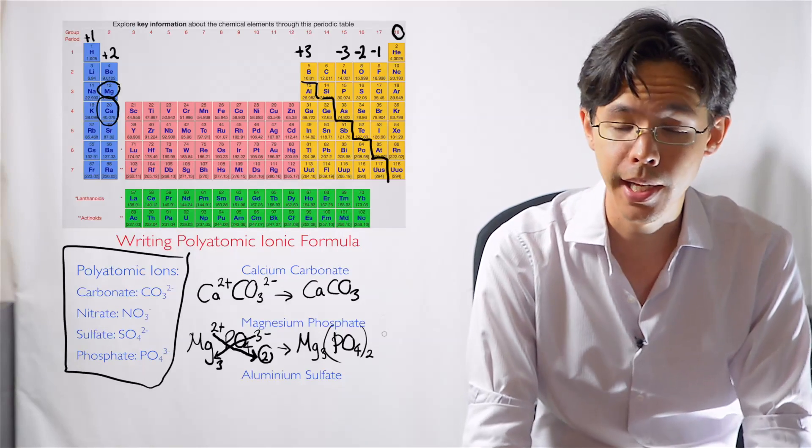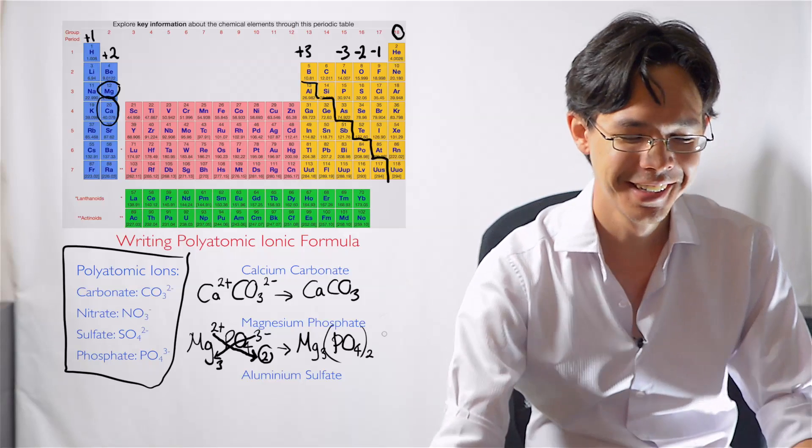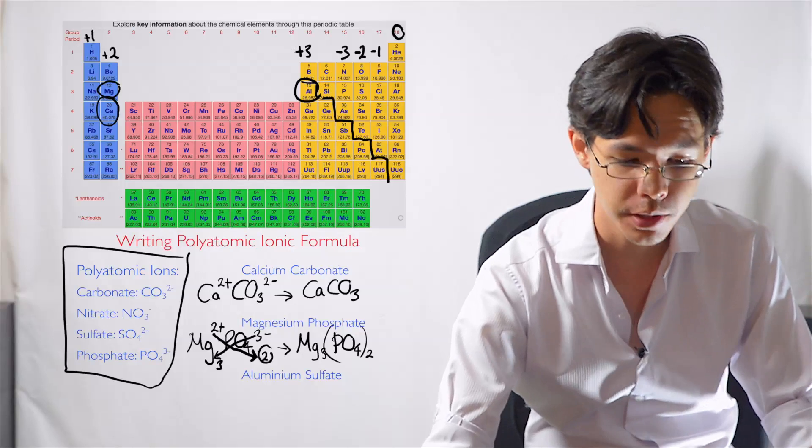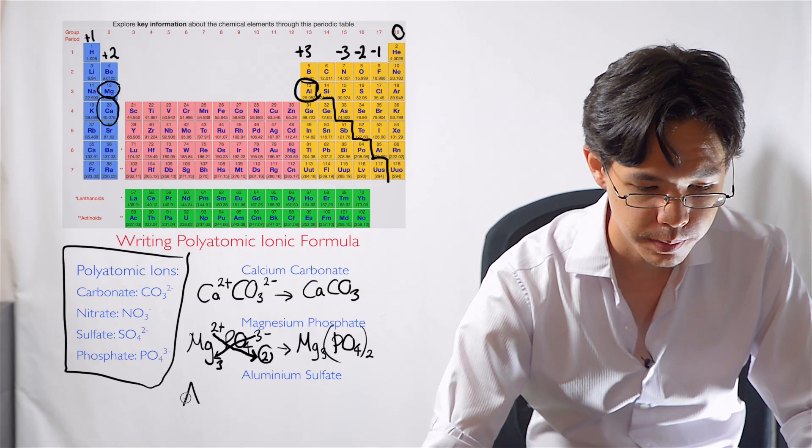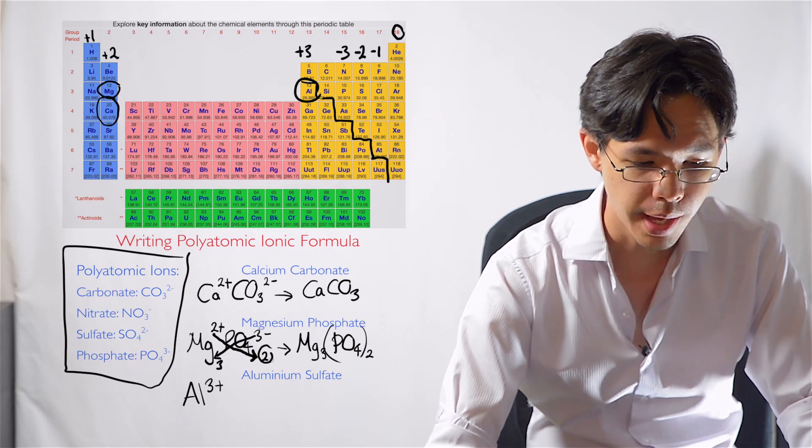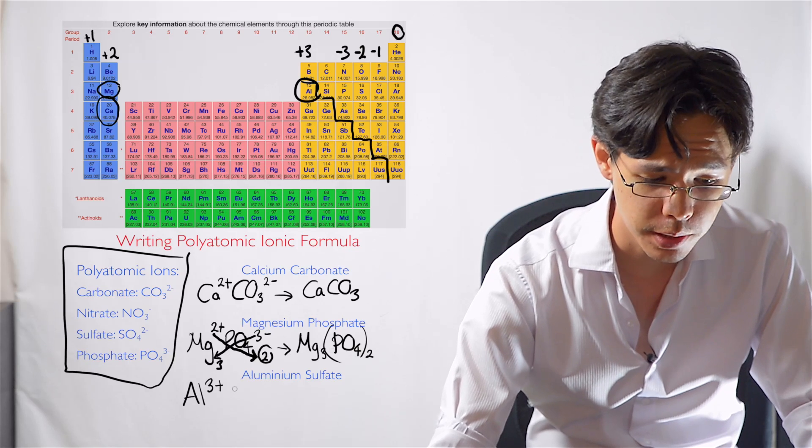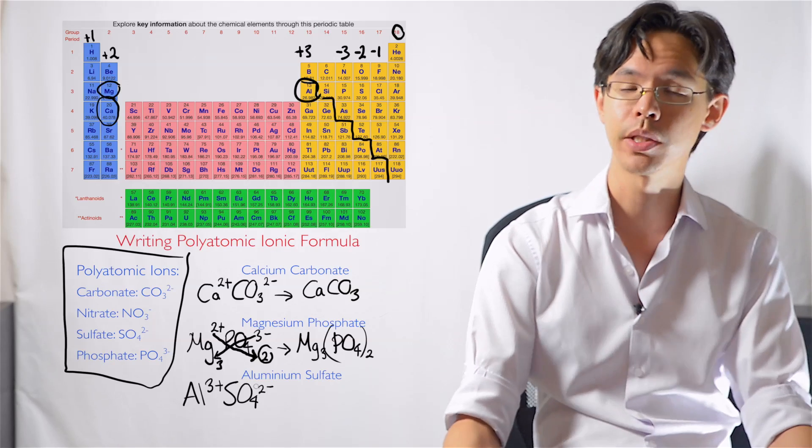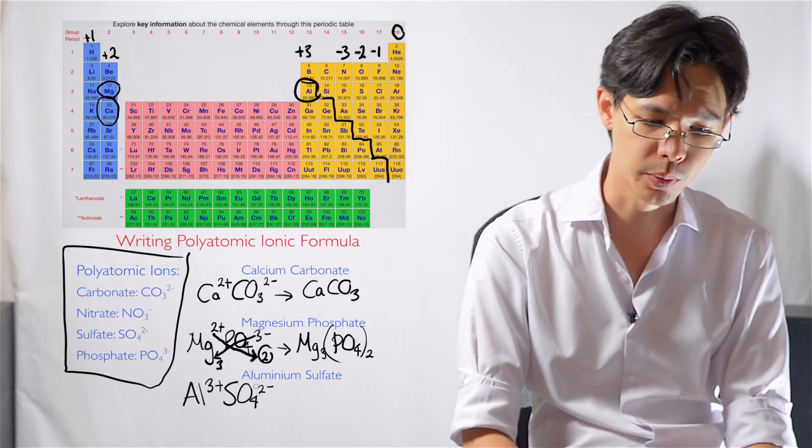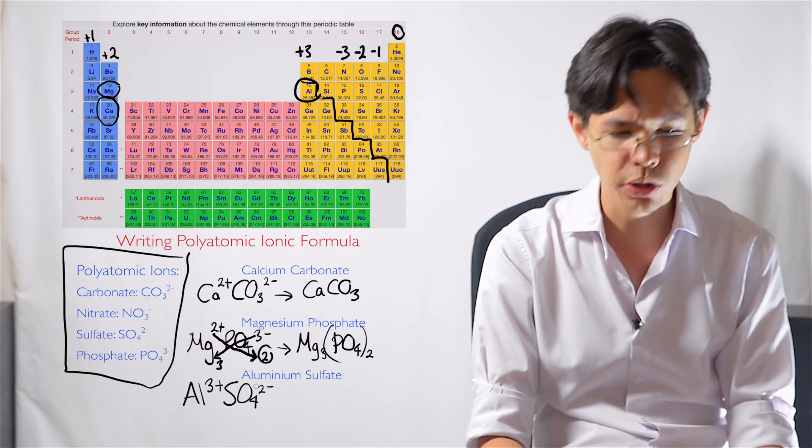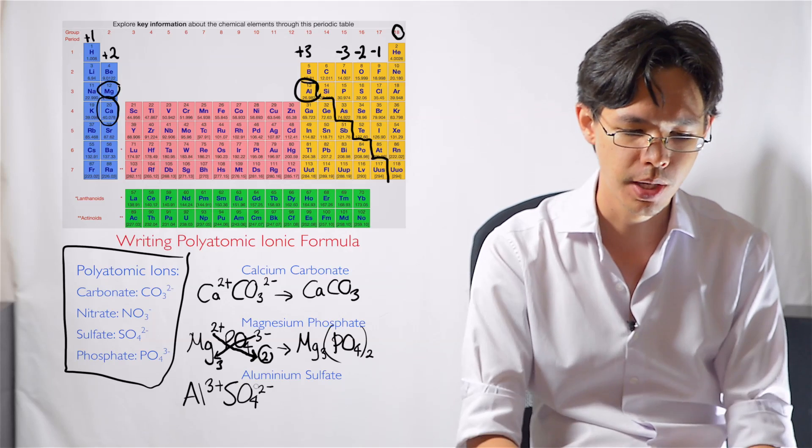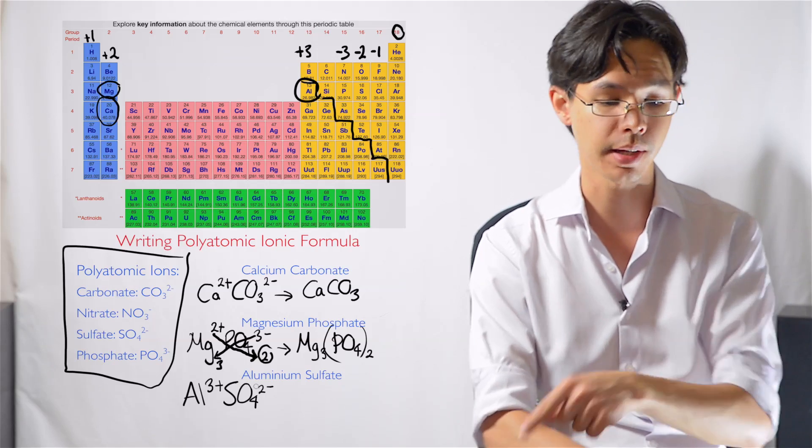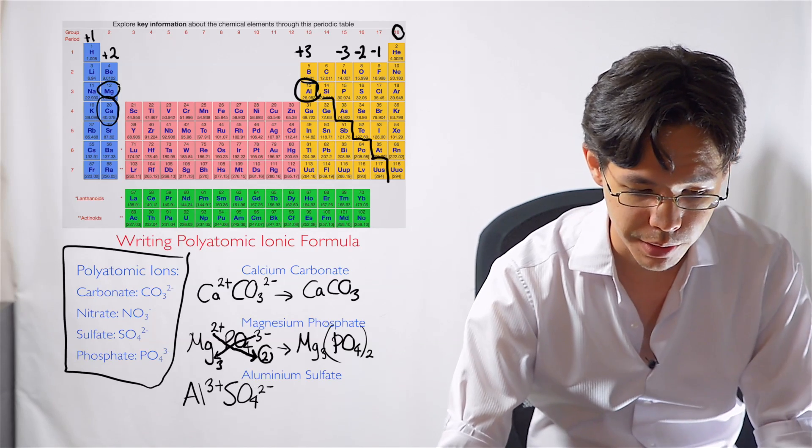Let's do the next one here. Aluminium sulfate. Alright, so aluminium. Let's go looking for it. Aluminium is over here. So it's going to be a positive 3 charge. And we've got sulfate. So it's SO4 2-. Let's look at this one. Is it balanced? No. It's not neutrally charged overall. And it's also got that 3 and 2 charge, which will require us to use the crossover rule again to solve for the answer.